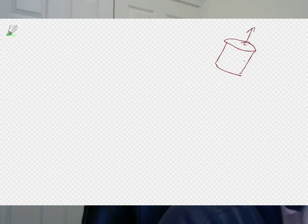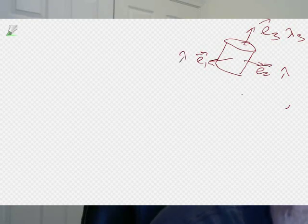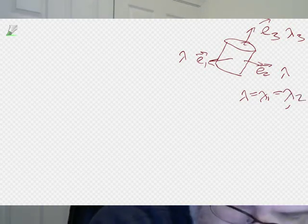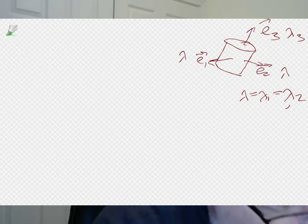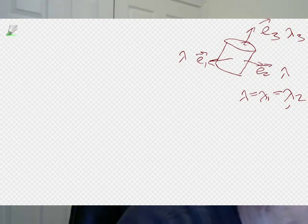Next, let's do the symmetric top. Without loss of generality we can model it as a cylinder — a shape where two principal axes have the same moment of inertia. So E1 and E2 have the same moment of inertia lambda, while E3 has a different moment of inertia lambda-3. That's what we mean by a symmetric top: lambda-1 equals lambda-2 equals lambda.